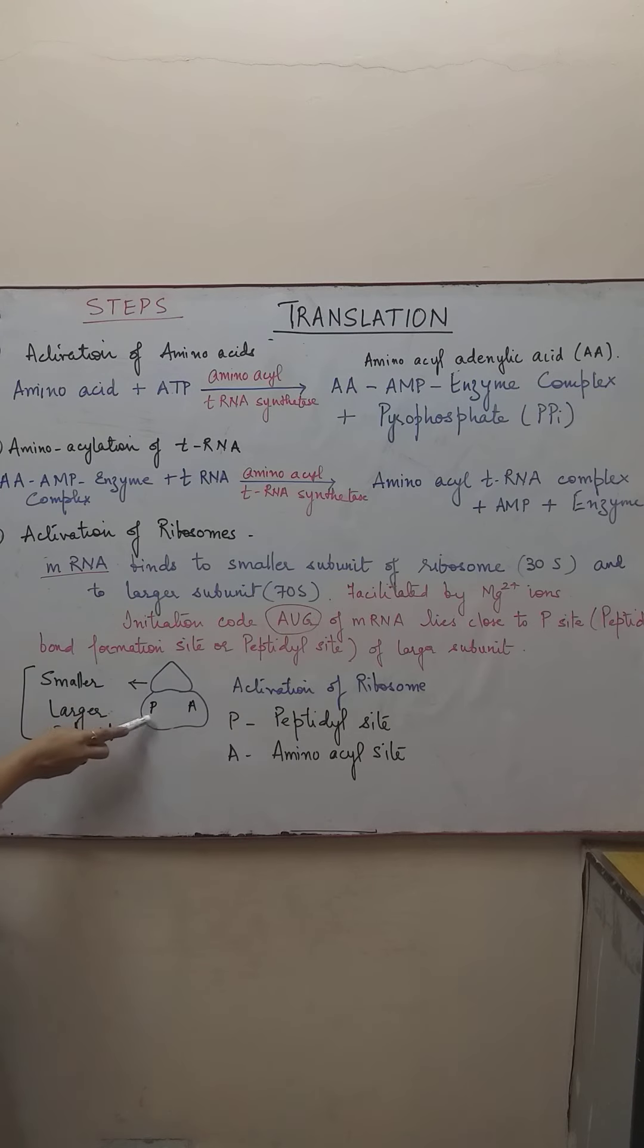P, because this larger subunit has two sites: P site and A site. P site is peptidyl site, the site where the peptide bond formation takes place because amino acids join with each other by peptide bonds to form the proteins. This initiation code AUG is present in such a way on the mRNA so that it lies close to the P site. A is the amino acid site.